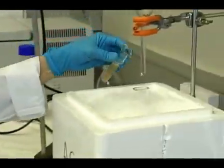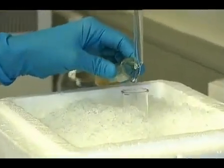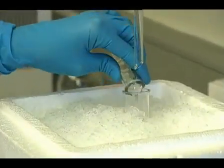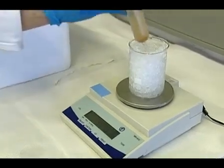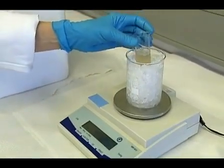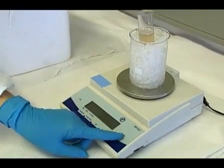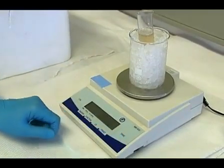Combine homogenate with filtrate in the centrifuge tube. Make sure the tubes are equally balanced and do a low speed centrifugation for 15 minutes at 600g.